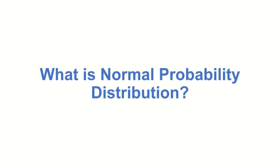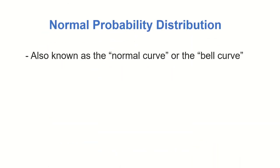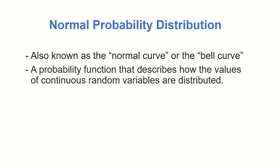Before we discuss the answers to the given questions, let us first define what is a normal probability distribution. When we say normal probability distribution, normal curve, or bell curve, it is a probability function that describes how the values of a continuous random variable are distributed. It is a probability distribution of a continuous random variable.